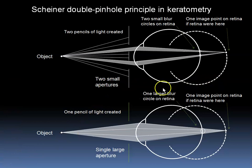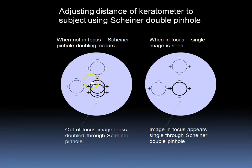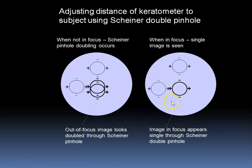This principle is used in the keratometer to help create a single image with a fixed object distance. Here we see a ring inside the viewfinder of the keratometer. The rings look doubled when not in focus, but look single when in focus. The device is calibrated so that it will only look single at one particular distance from the patient's eye. There is a single ring of light in the image coming off the patient's cornea, in which some of it goes through the Shiner double pinhole, and other parts go through doubling prisms, which will be discussed next.